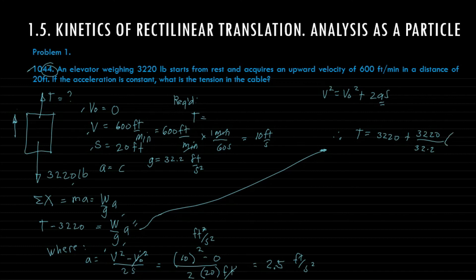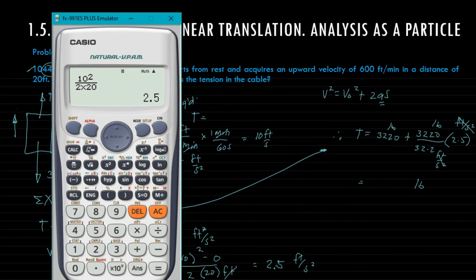Unit analysis: this is feet per second squared, this is feet per second squared also, this is in pounds. Therefore the remaining units will be pounds. Compute: 3220 plus 3220 over 32.2 times 2.5, that is 3470 pounds.